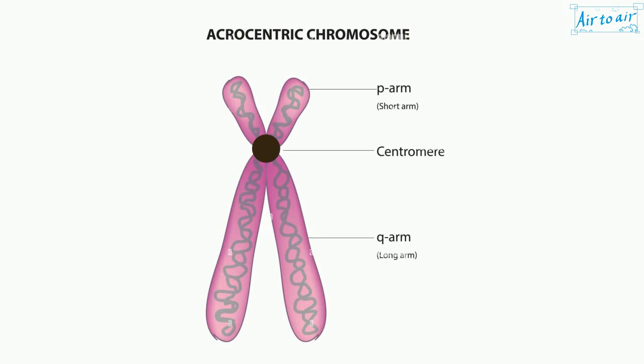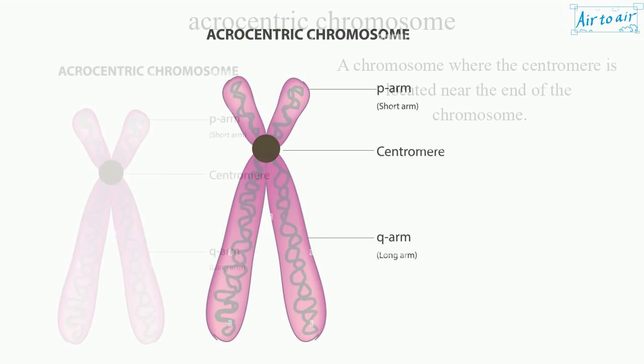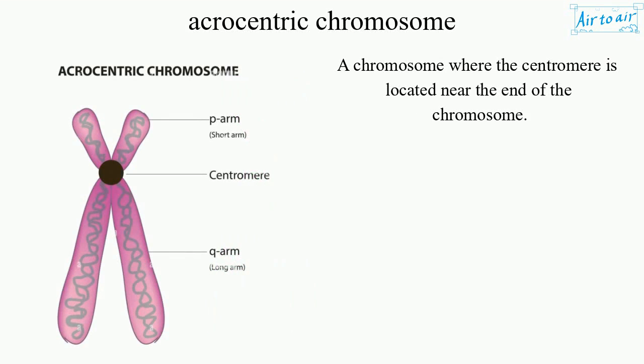Acrocentric chromosome. A chromosome where the centromere is located near the end of the chromosome.